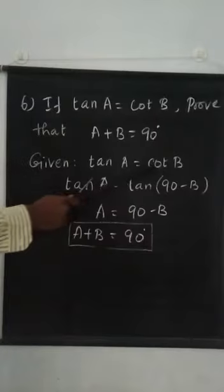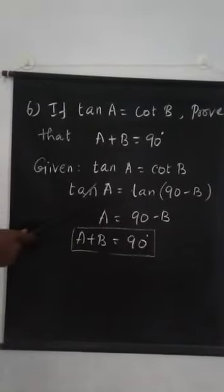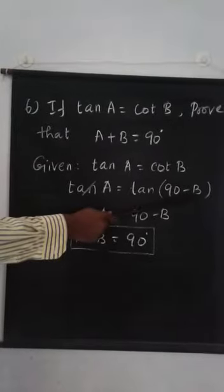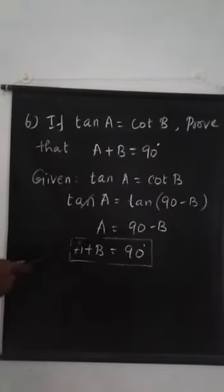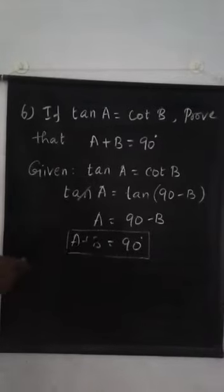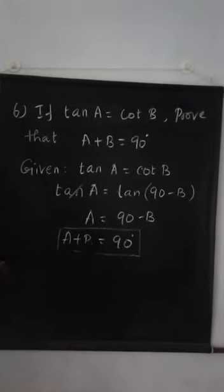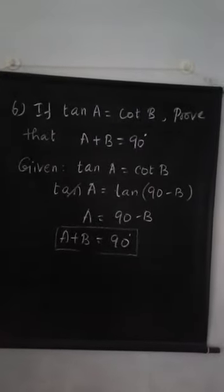Given tan A equals cot B. Tan A equals tan(90 - B). A equals 90 minus B because this tan should be cancelled. This minus comes as plus. So A plus B equals 90 degrees. Thank you.